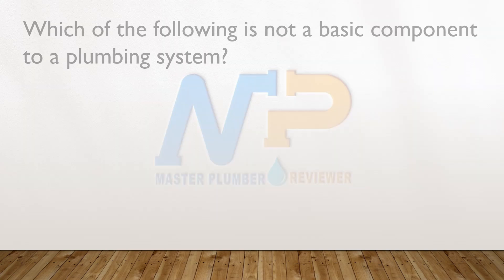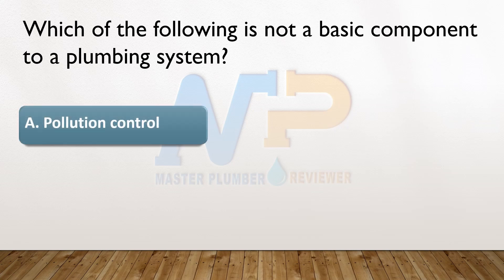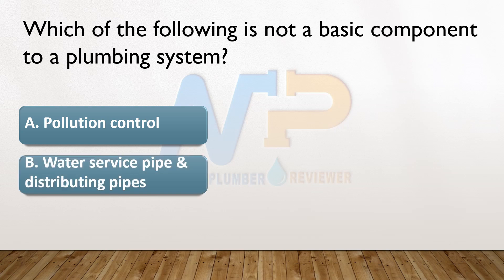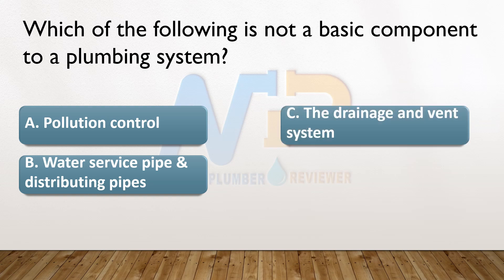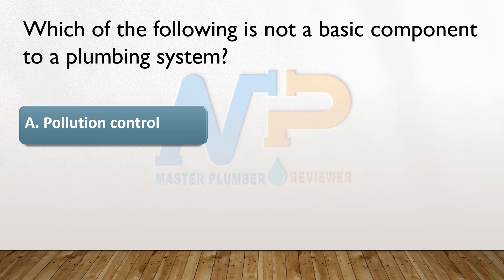Which of the following is not a basic component to a plumbing system? A. Pollution control. B. Water service pipe and distributing pipes. C. The drainage and vent system. D. Plumbing fixtures. The answer: A. Pollution control.